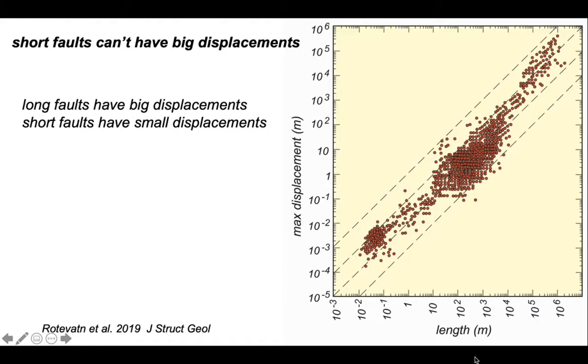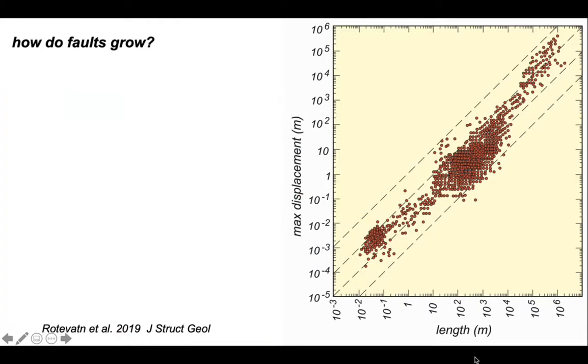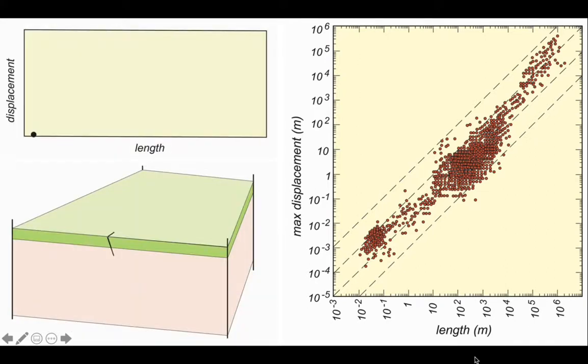Short faults can't have big displacements. So can we use this information to understand how faults grow? One idea might be that faults start off small and grow and acquire displacement as they do so. So here we have a situation with our fault about to grow - moves, grows a little bit, and that's its length and a bit of displacement. Grows a bit more, displaces some more, grows some more, displaces some more.